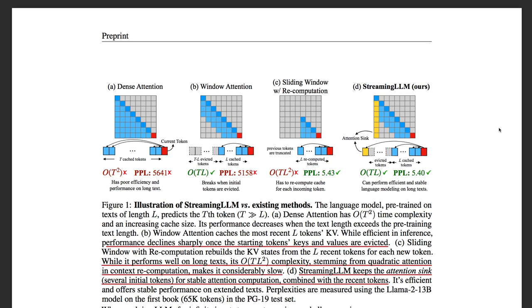The next method is called window attention. The idea is very simple. The model cannot handle so many tokens. How about let's just use a sliding window.